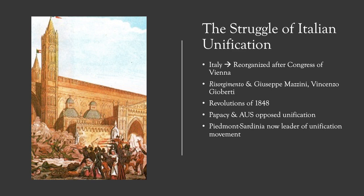In fact, the term 'Italy' was really just a geographic term to describe this region of Europe. Efforts for unification and liberalization of various Italian states began in the 1820s and 1830s with a movement known as the Risorgimento. The Risorgimento was a political and social movement for Italian unification, and in the first part of the century it was largely led by Giuseppe Mazzini, a romantic nationalist and revolutionary who founded the group Young Italy, which fought in the 1830 and 1848 revolutions. Those revolutions failed to bring any significant change to Italy's political state.